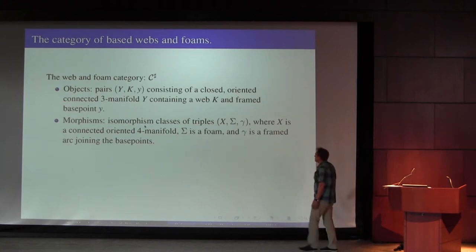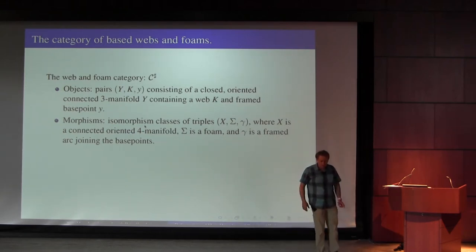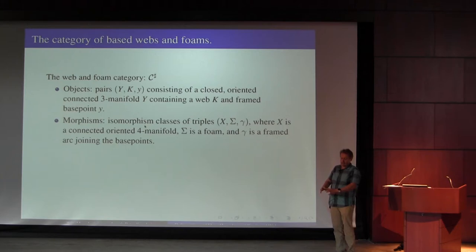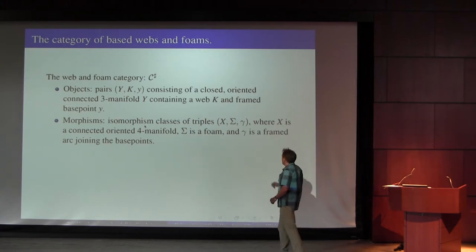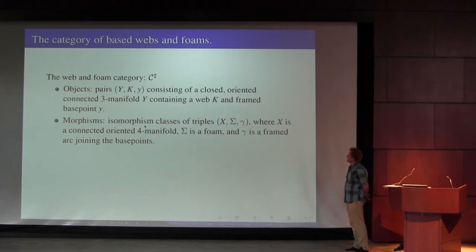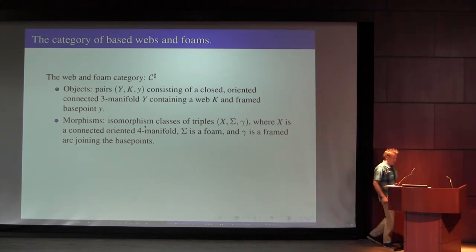There's a sigma here which is a foam — a four-dimensional analog of a web. It's a sort of two-complex embedded in the four-manifold, where the singularities in the two-complex are allowed to be anything in a neighborhood of the cone on the one-skeleton of a tetrahedron. That's the gadget that induces a map, and there's also a base point — a path joining the incoming and outgoing base points with a framing of that path.